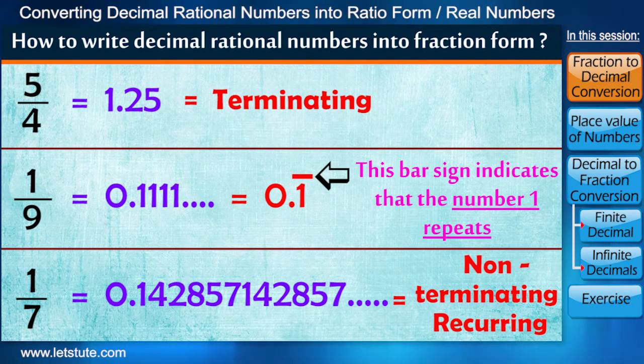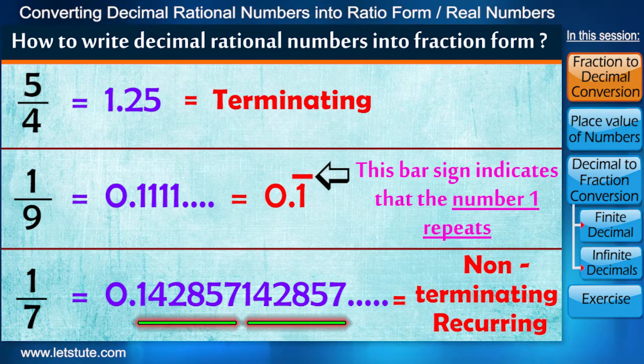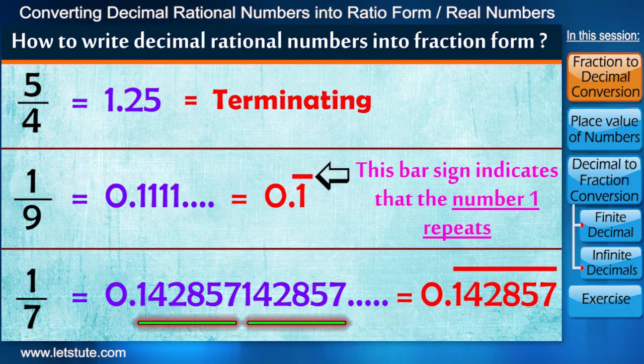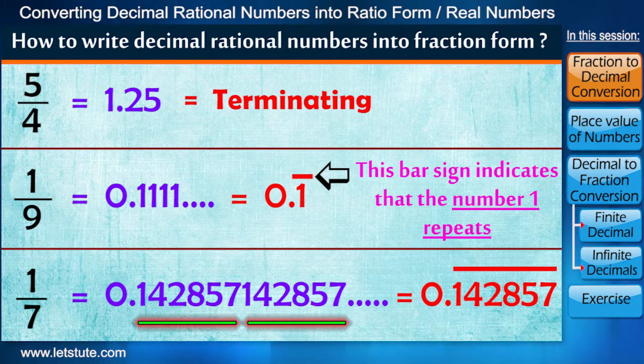We also write 0.111 as just 0.1 with a bar above one. This bar sign indicates that the number 1 repeats. Same way, 0.142857142857 and so on can be written with a bar because 142857 repeats.